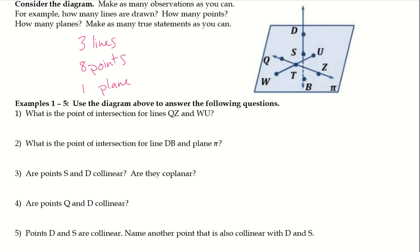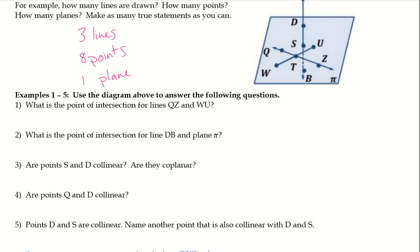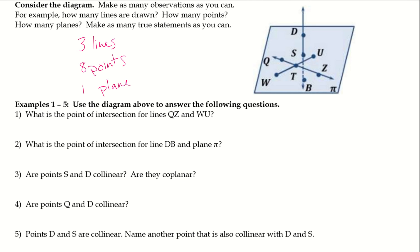Examples one through five — use the diagram above to answer the following questions. What is the point of intersection for lines QZ and WU? It would probably help if we highlighted them. So QZ is here, and then we have WU here, and we want to know what their point of intersection is. In this case, T.